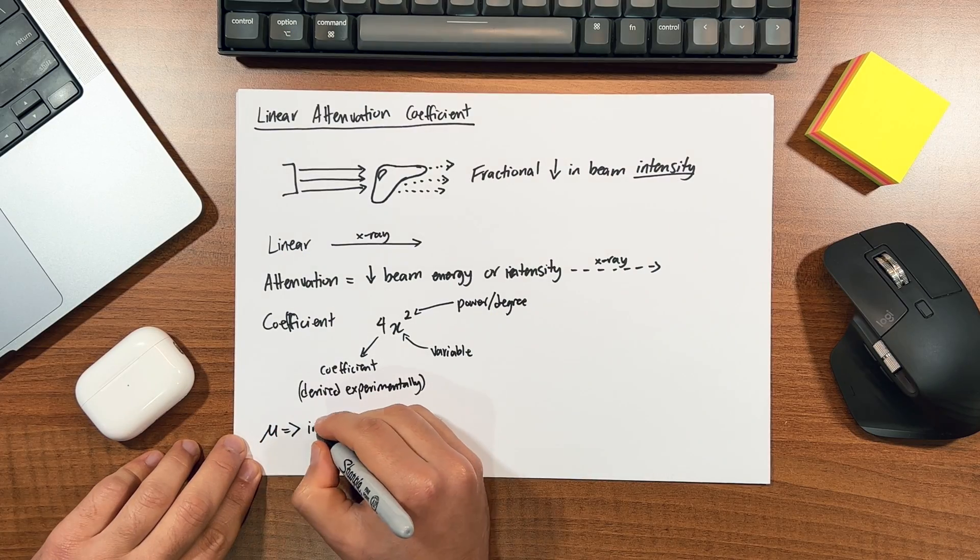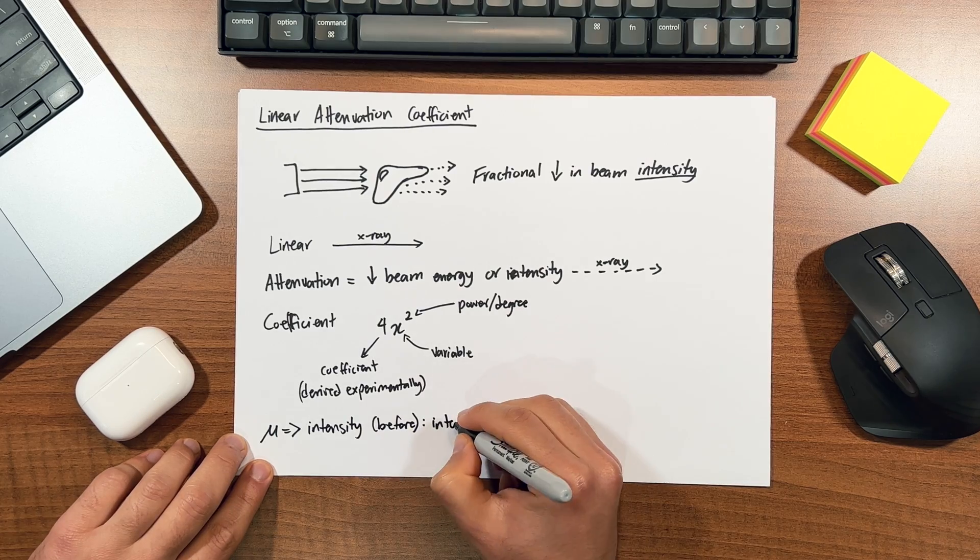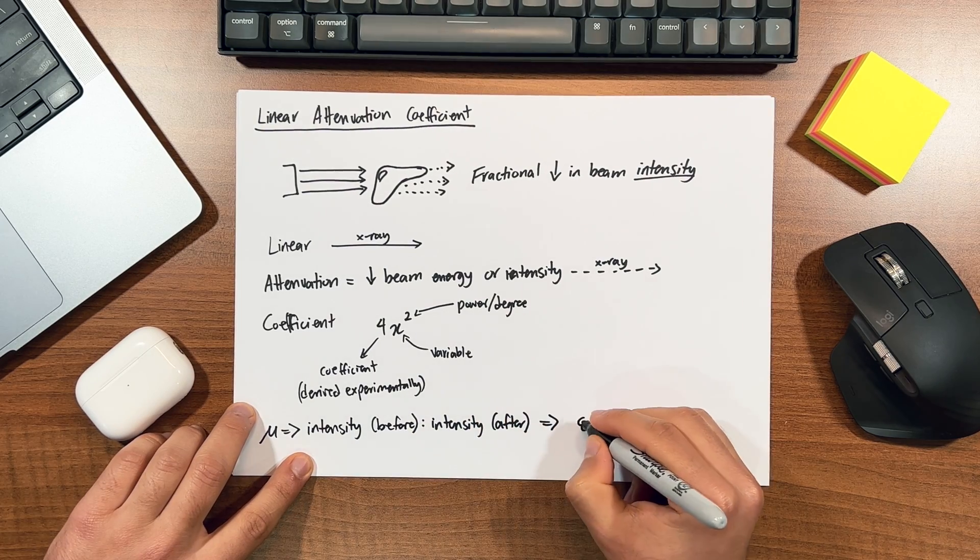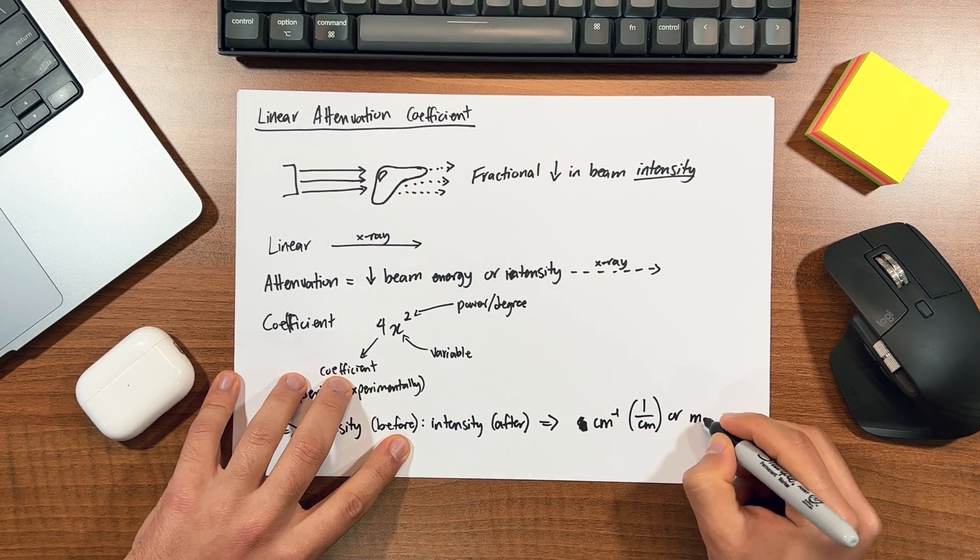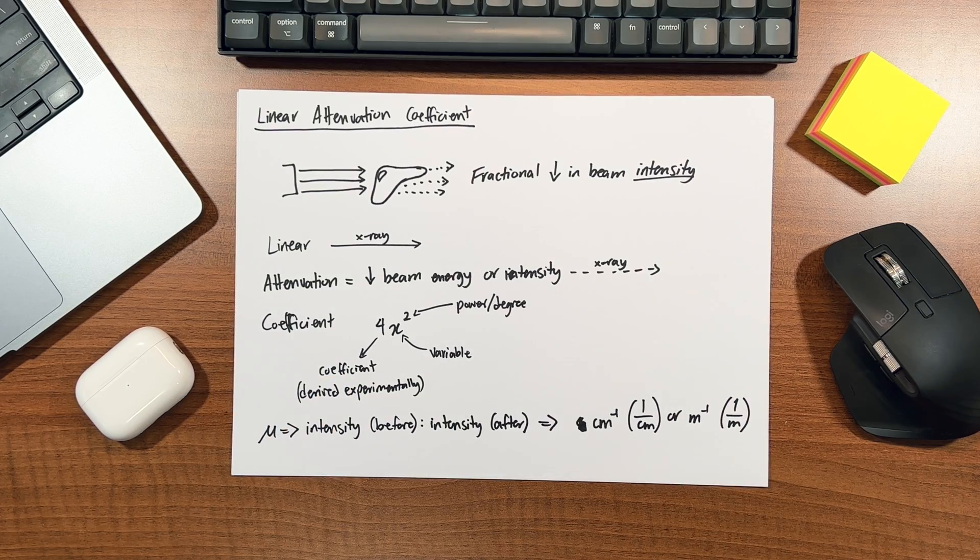And this coefficient is denoted by the symbol mu, expressed as the ratio of intensity of radiation before and after it passes through a material. With the unit being the inverse of the length, so either centimeters to minus 1 or meters to minus 1.